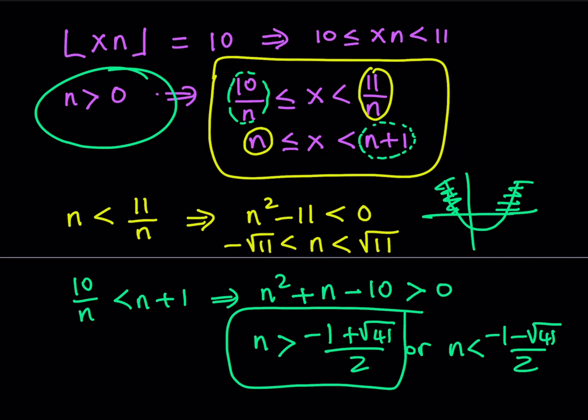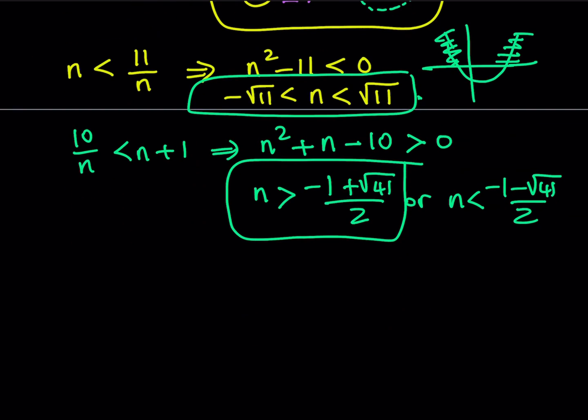So we're going to take this. We have this inequality and this inequality. And since n is positive, this only means n is between 0 and √11. If you put those two together, (-1+√41)/2 is less than √11 because it's close to 2-something, and √11 is greater than 3. So that means n needs to be—and this is super important because that's going to give us the solution—n is between (-1+√41)/2 and √11.